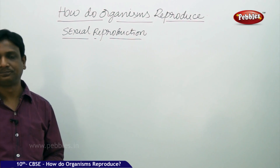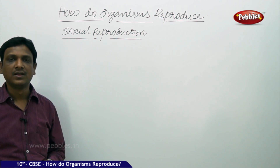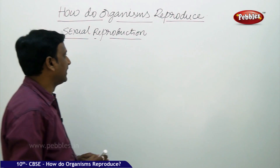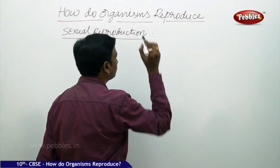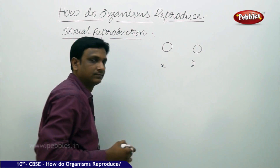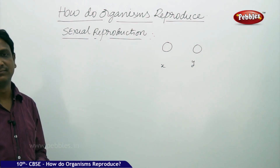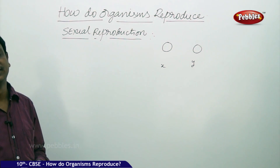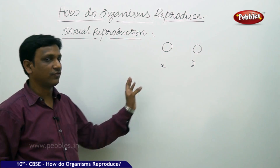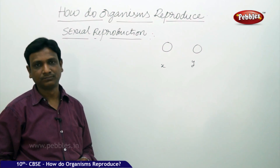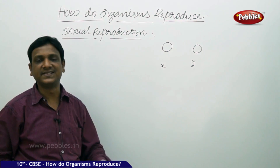What is the sexual means of reproduction? In sexual reproduction, there is involvement of two organisms. Two organisms participate in the process of reproduction, that is, in the production of young ones. Sexual reproduction involves two organisms of not the same gender — two organisms of opposite gender.